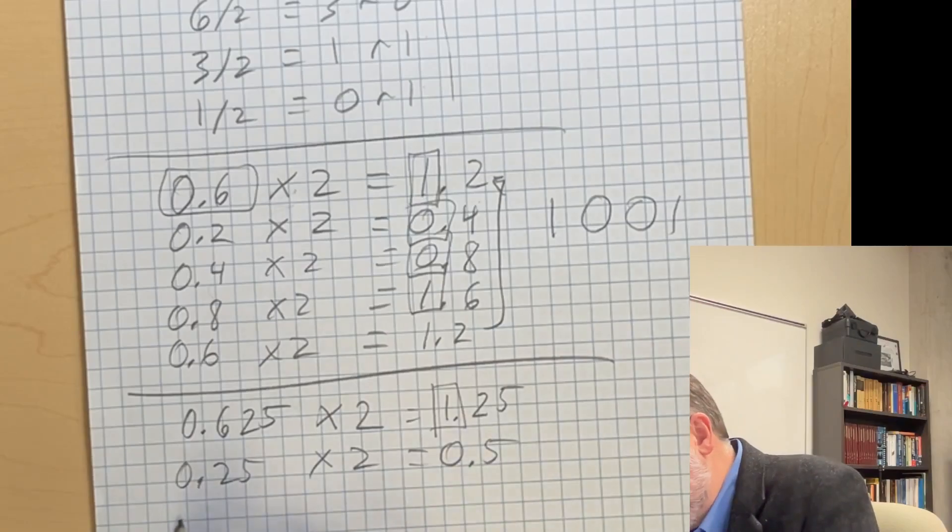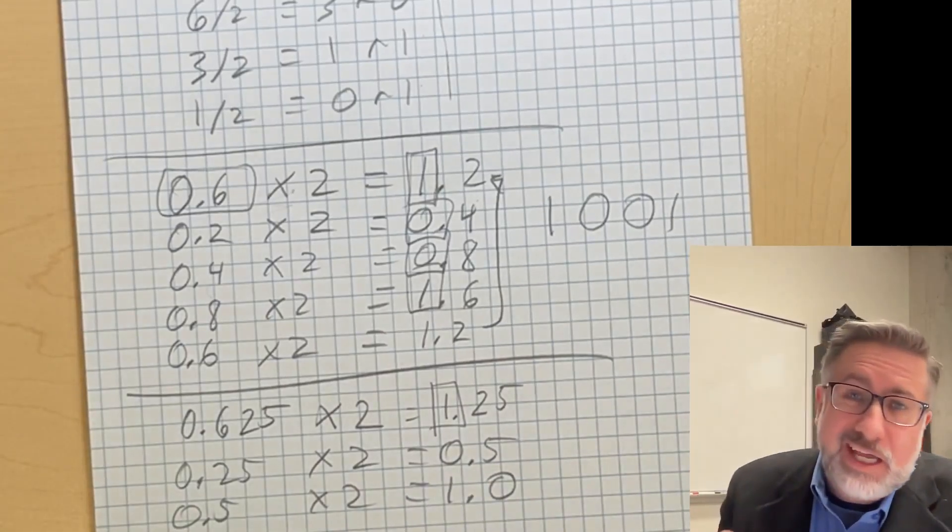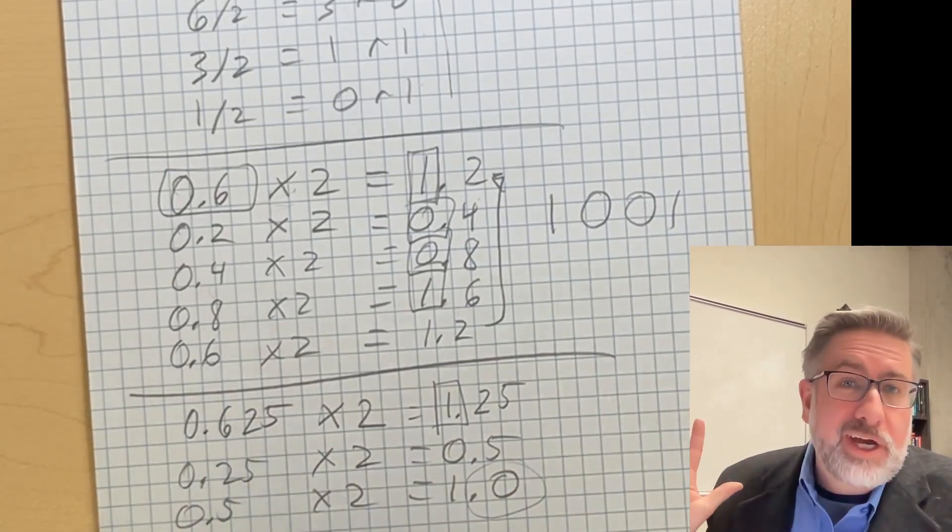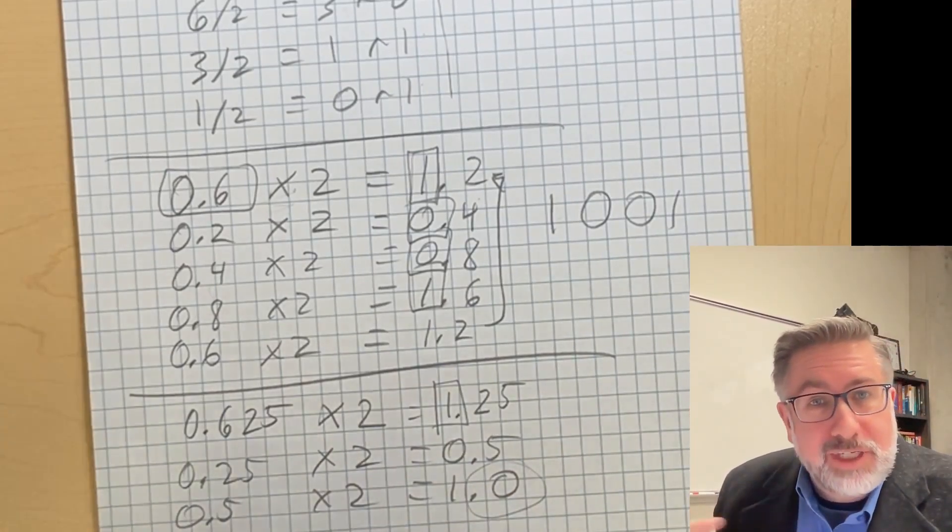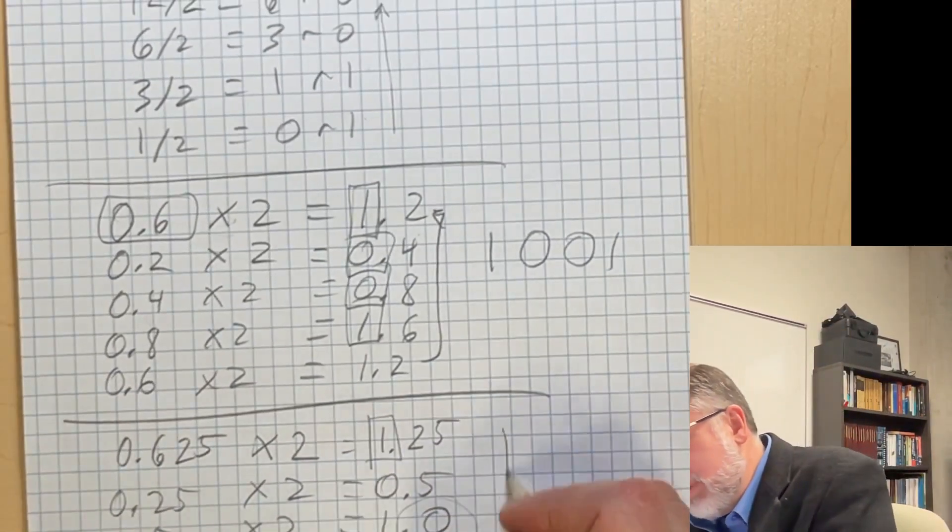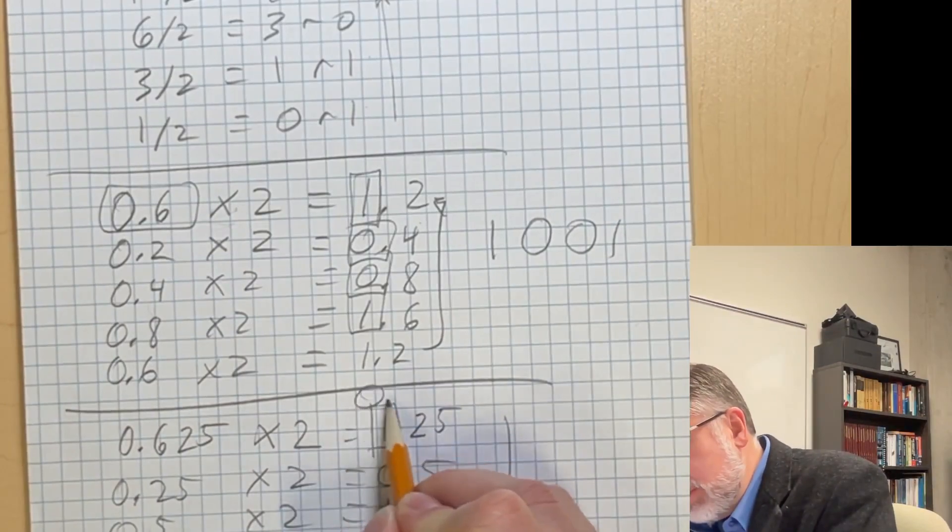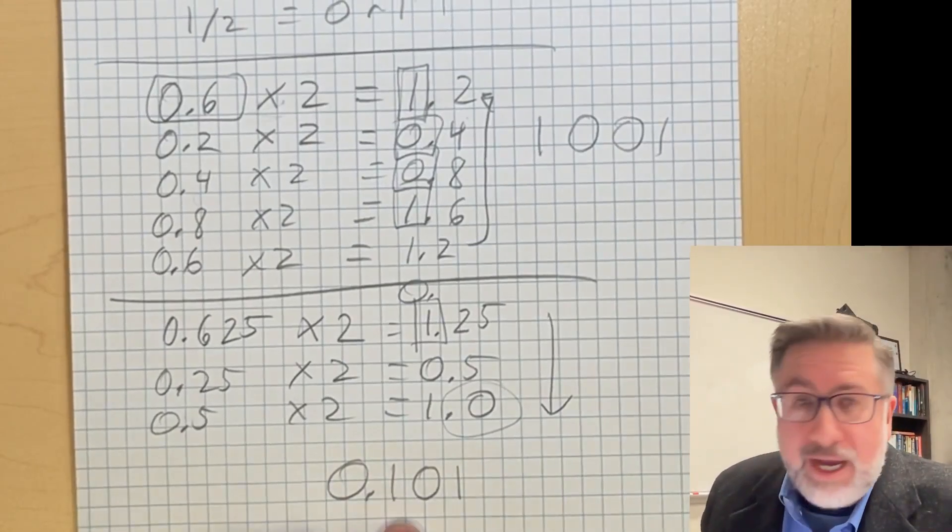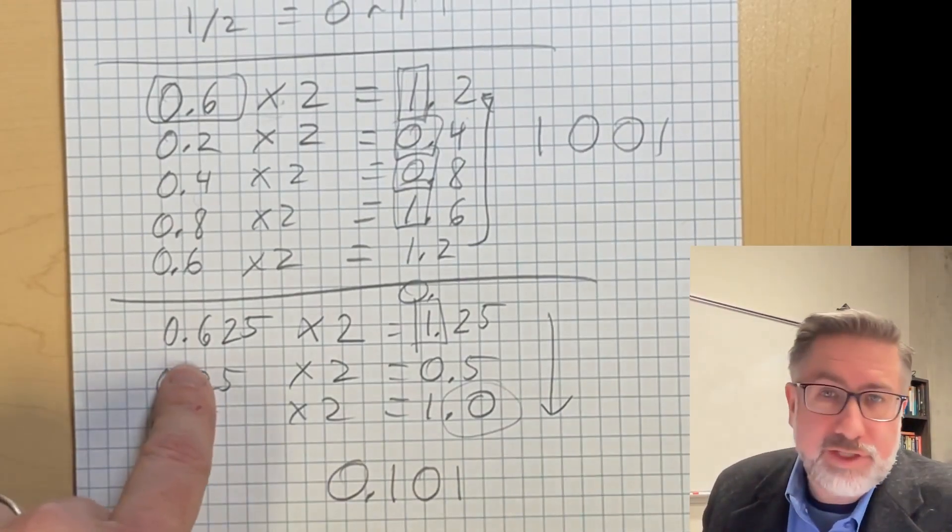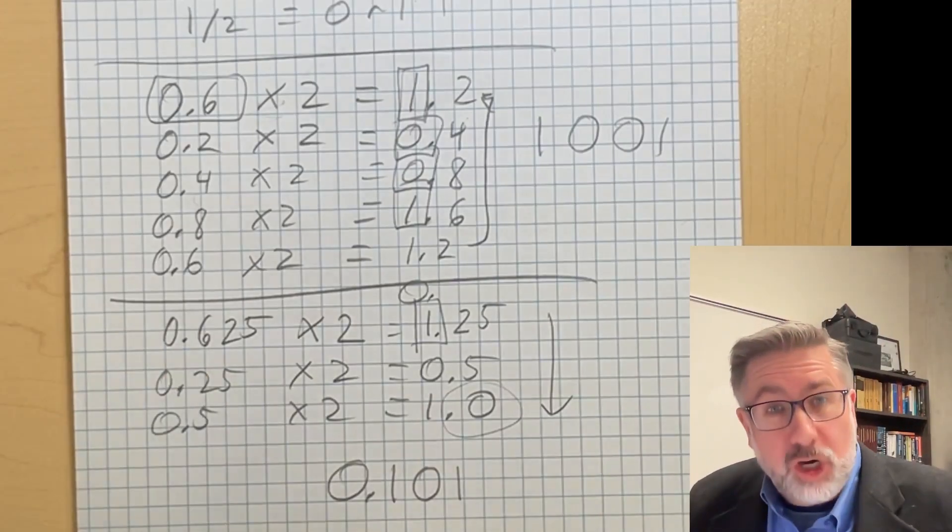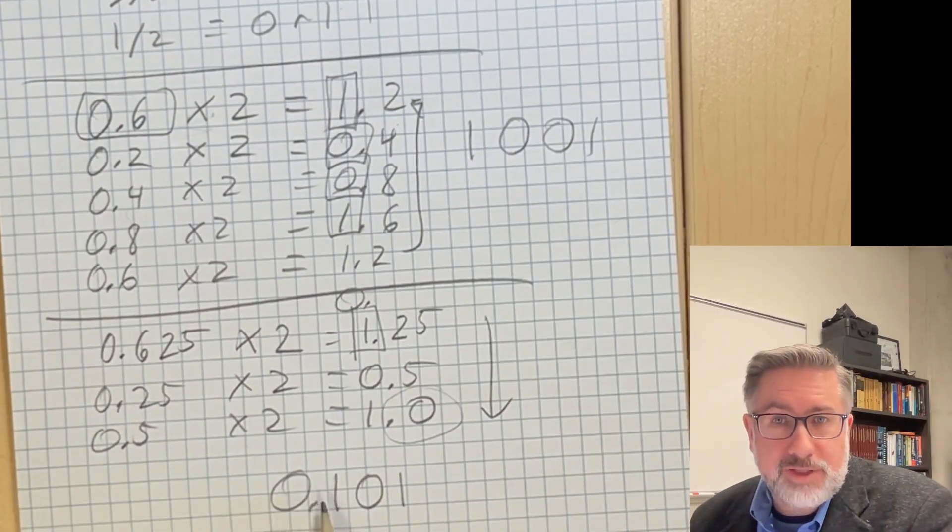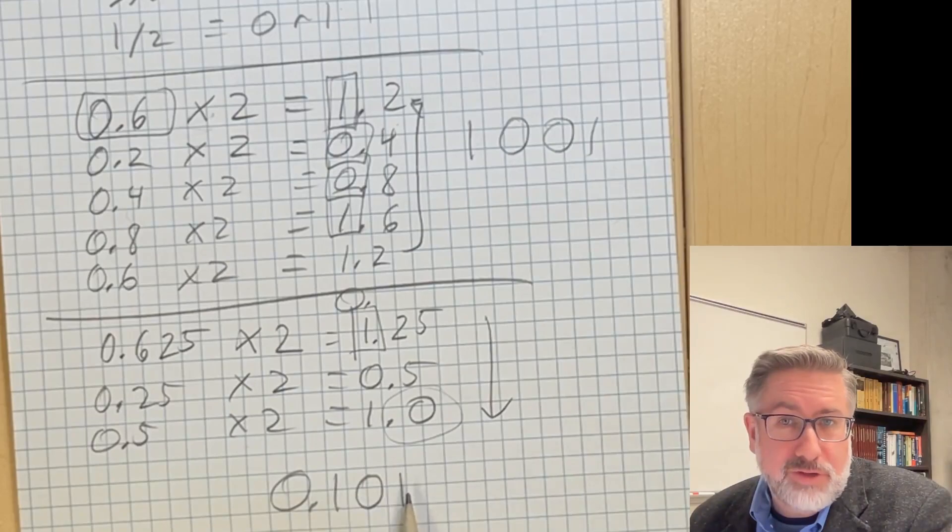Then we take 0.25 multiply by 2, we get 0.5, and then we get 0.5 times 2 equals 1.0. Now we see how we can terminate this example. If we get a number where the fractional part is 0, we're done. We don't have to do anything more because 0 times 2 is 0 and we would go on forever. So we read from the top down and we get 0.101 as our binary fraction representation of this number 0.625.